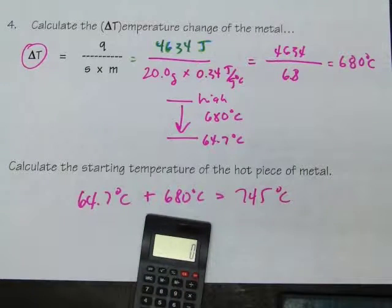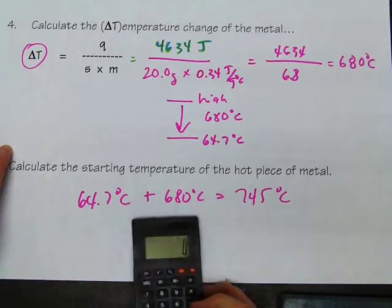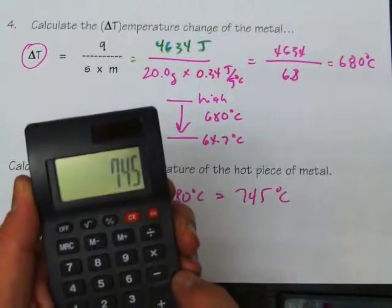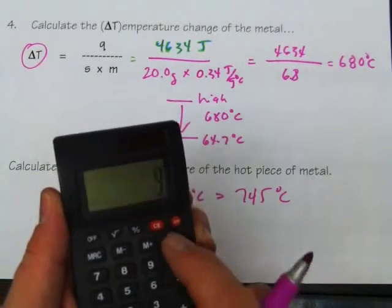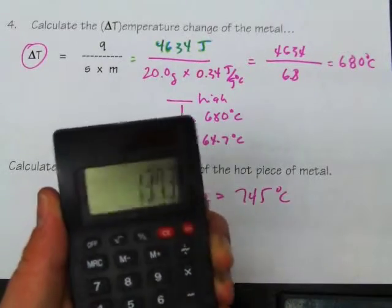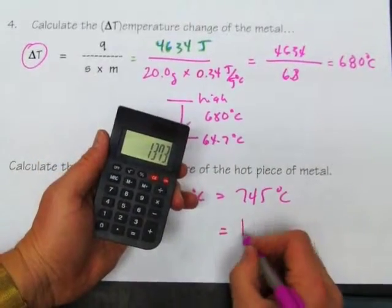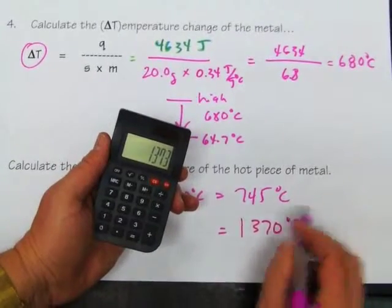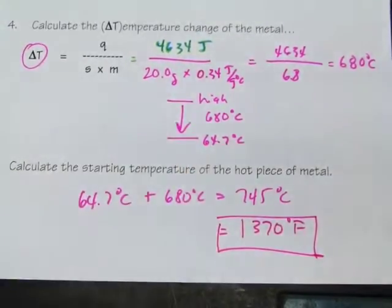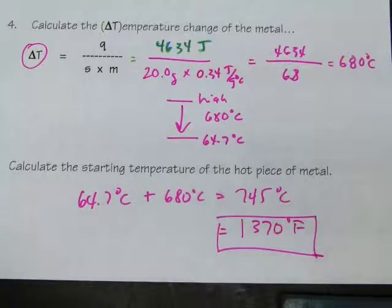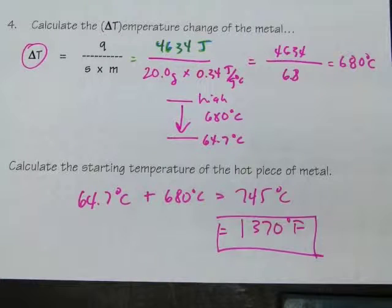Since most people think in Fahrenheit rather than Celsius, let's convert: 745°C × (9/5) + 32 = 1,370 degrees Fahrenheit, rounded to three significant figures. That's incredibly hot — when you bake cookies, the oven is only about 350°F. The temperature in a Bunsen burner flame can be as high as 1,370 degrees Fahrenheit, which is why we must be very careful with fire in the lab.